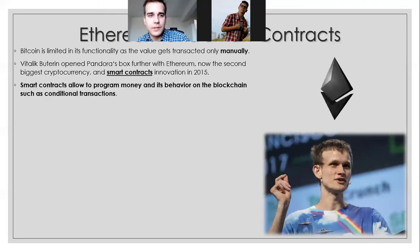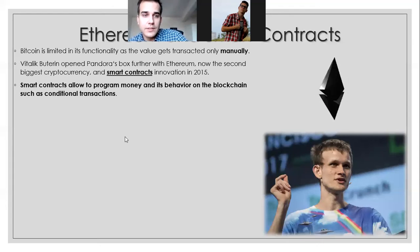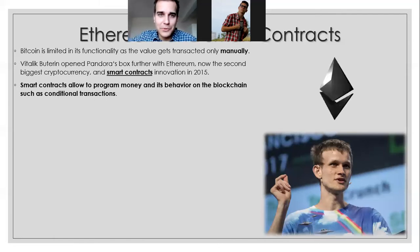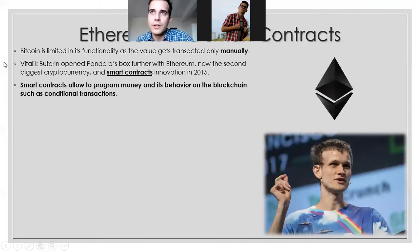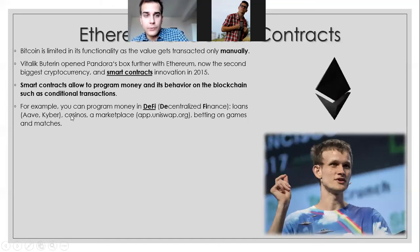That means you can put some kind of conditions into what can happen, and then the money will act on its own based on the code. Smart contracts allow you to program money and its behavior on the blockchain, such as conditional transactions. For example, if you get a grade of one from school, you will get this money — or if A happens, then you will get the money.